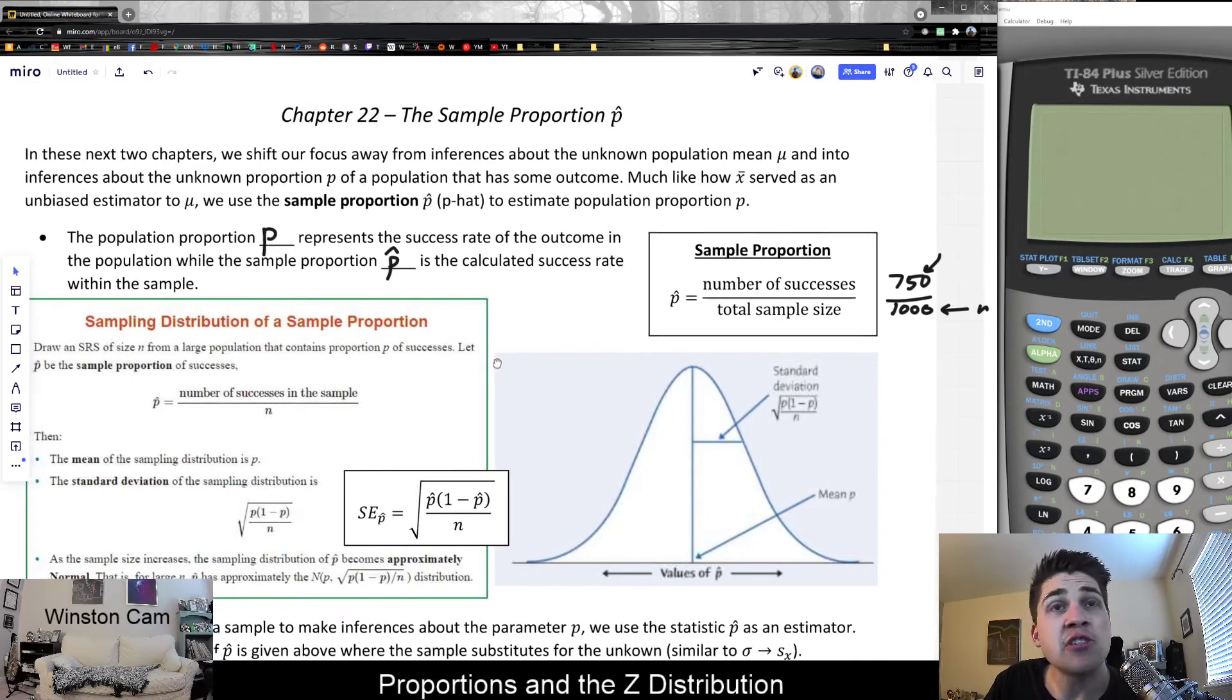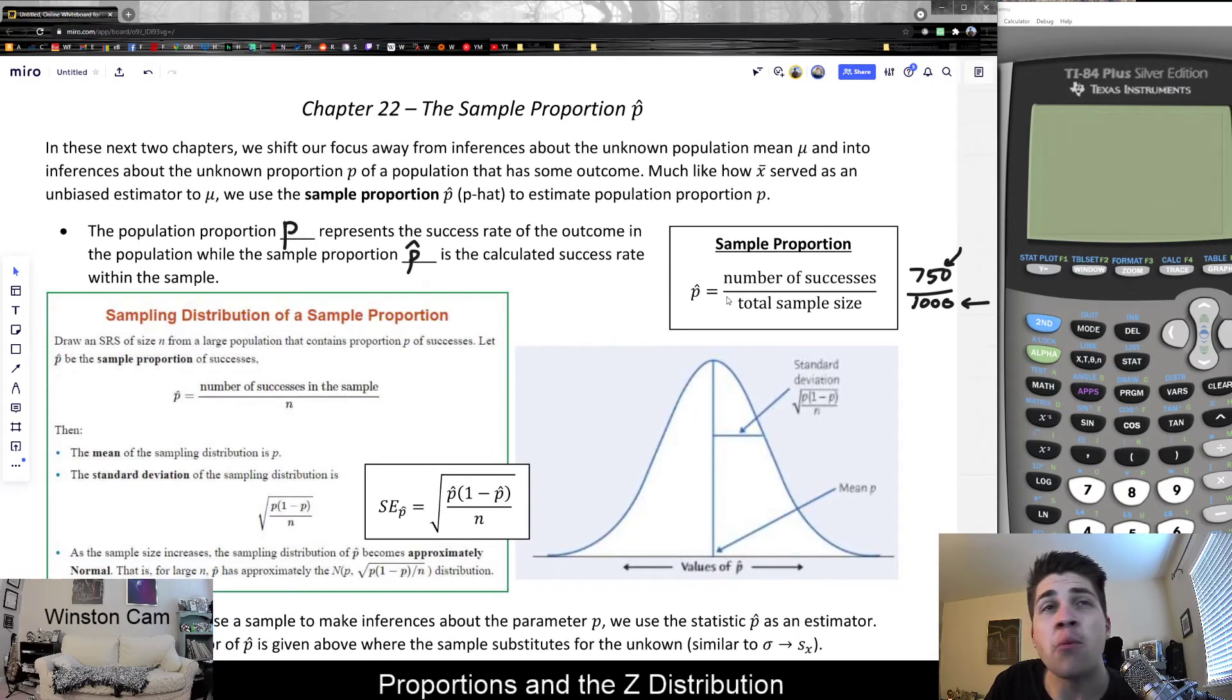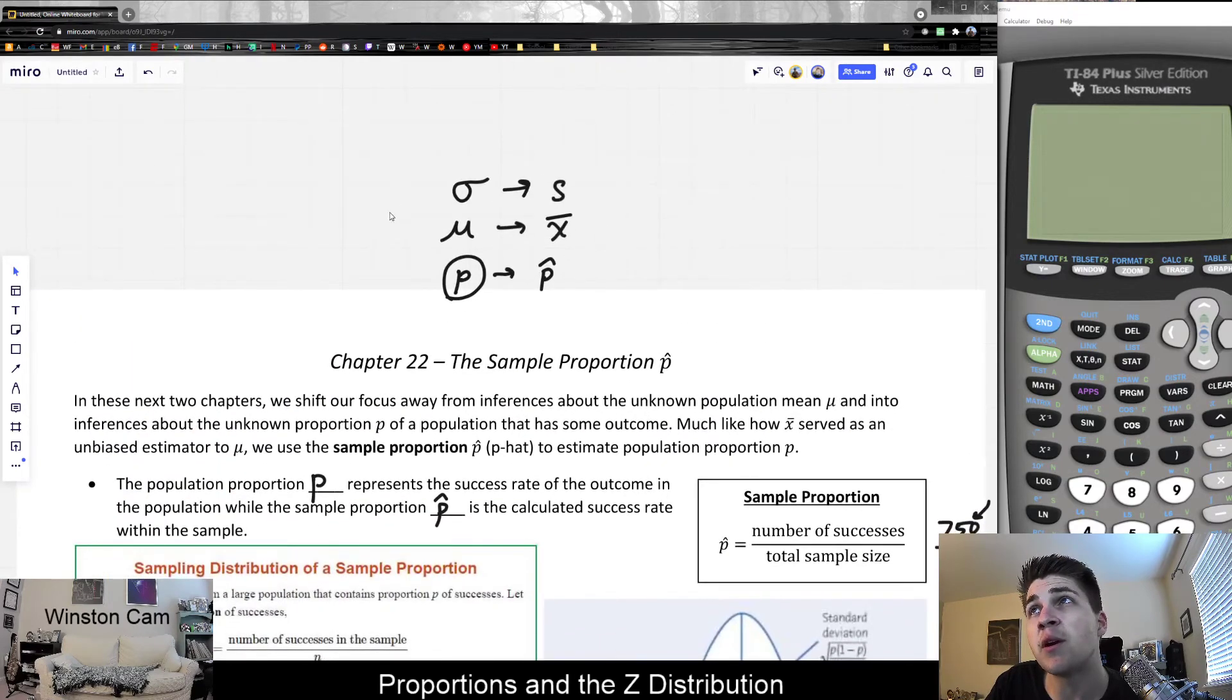What's interesting about the sample proportion is much like when we studied x bar with regards to the mean, we can use the sample as an unbiased estimator for the mean. Similarly, we can use p hat as an estimator for the proportion p.